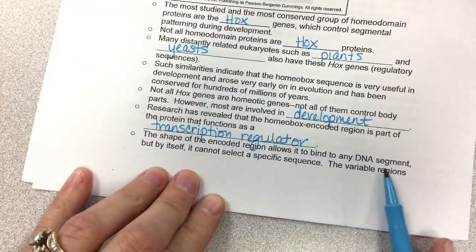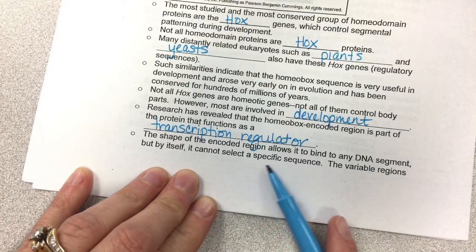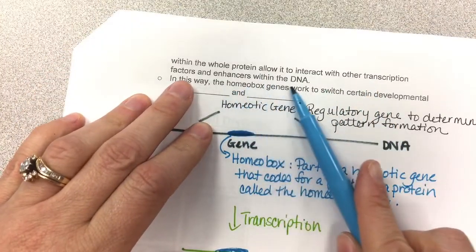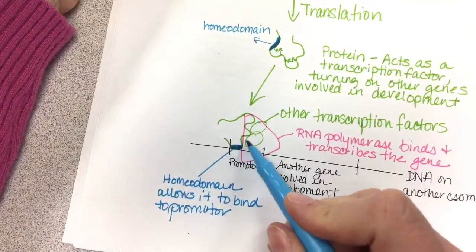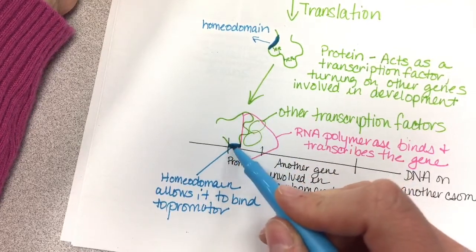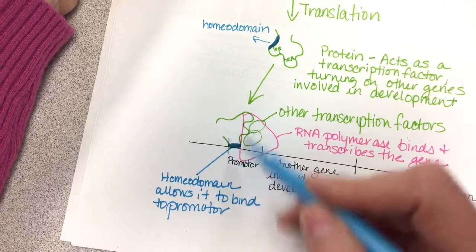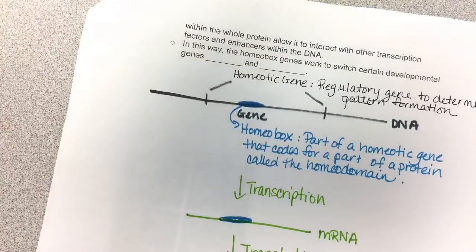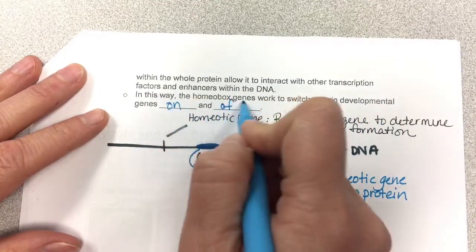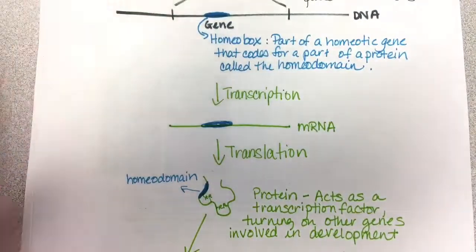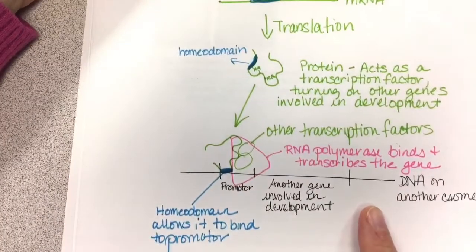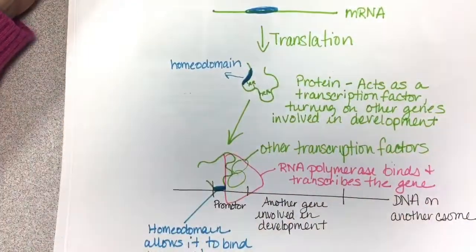The shape of the encoded region allows it to bind to any DNA segment, but by itself it cannot select a specific sequence. The variable regions within the whole protein allow it to interact with other transcription factors and enhancers within the DNA. It's the whole package — not just that protein or that part of the protein — that allows eventual RNA polymerase binding. In this way, the homeobox genes work to switch certain developmental genes on and off, and are involved in morphogenesis.